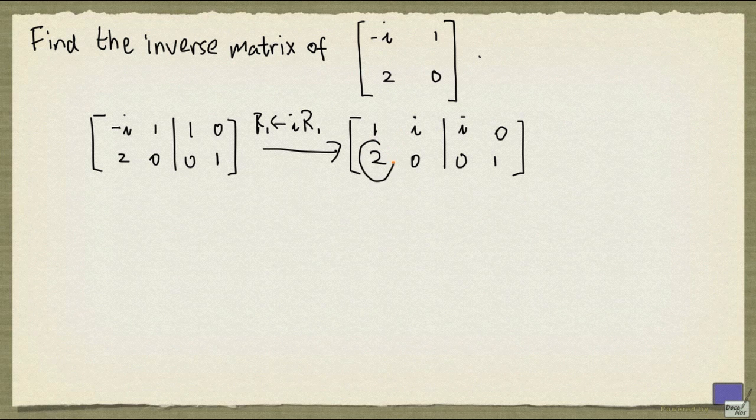Now I can eliminate these two by adding minus 2 times row 1 to row 2. And this is what I get.